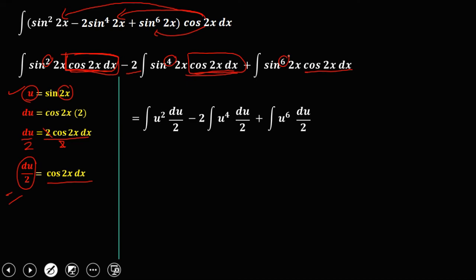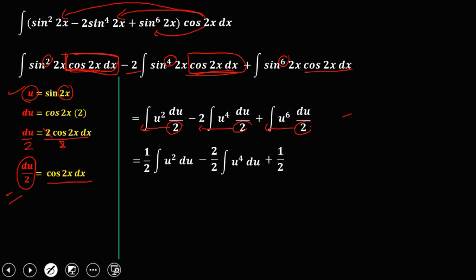Simplify by pulling the denominator outside: one half times the integral of u squared du, minus 2 over 2 times the integral of u to the power 4 du, plus one half times the integral of u to the power 6 du.